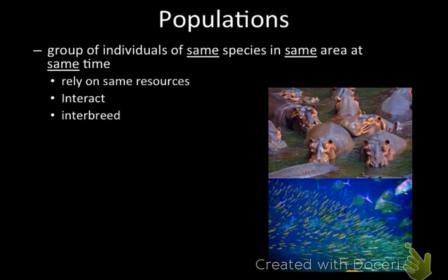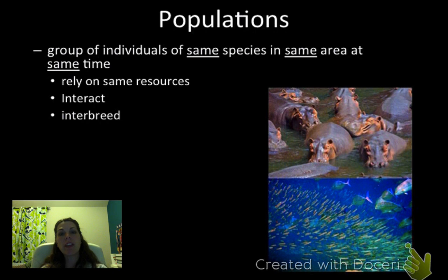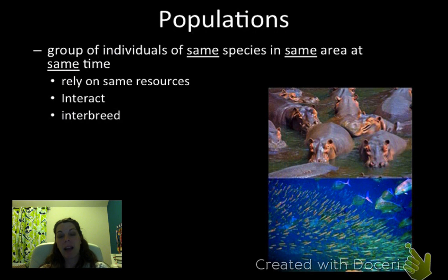The first thing we need to do is define what a population is. A population is a group of individuals of the same species that are in the same area at the same time, and we as the ecologists or biologists studying the population get to define what that area is. The reason we study populations in population ecology is because we're interested in the interactions between those organisms and the biotic and abiotic factors in an ecosystem.